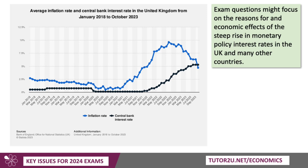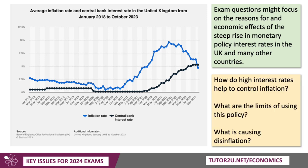My first topic is the combination of interest rates and inflation. You can see here a big rise in UK interest rates shown by the black line, and a steep rise in inflation in the UK. Exam questions might focus on the economic impact of higher interest rates, both here in the UK and other countries. How do high interest rates help to control inflation? What's the theory? What's the evidence? What are the limits of using this monetary policy tightening? Because there are many factors affecting inflation, not just the rate of interest.